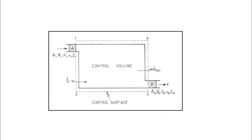When talking about an open system, we generally use an approach called the control volume approach. Because in an open system there is entry and exit of mass, we concentrate our attention on a fixed volume rather than on a fixed mass. We are interested in a system approach because we want to know what is happening to the system due to effects of the surrounding. Since there is no fixed mass in an open system - mass comes in and mass goes out - it is better to concentrate our attention on a fixed volume.